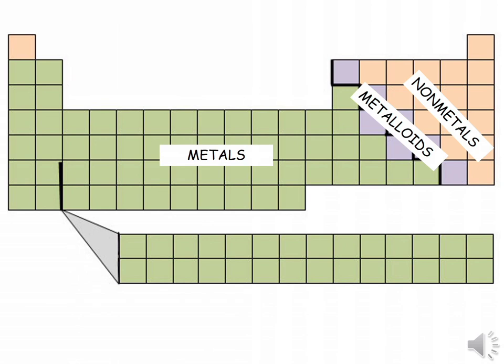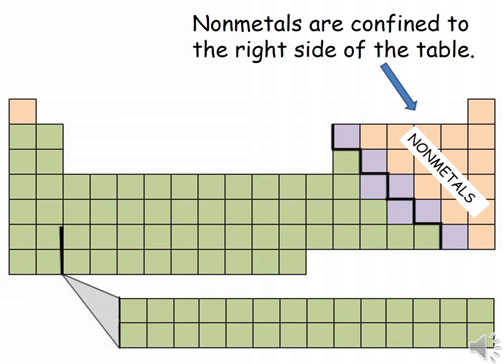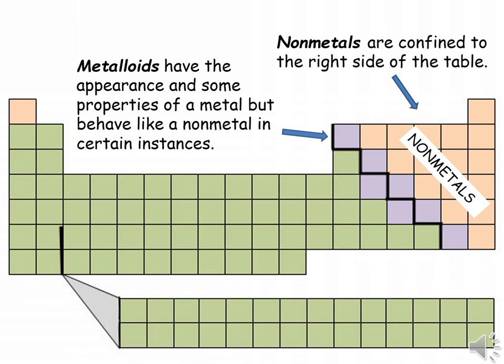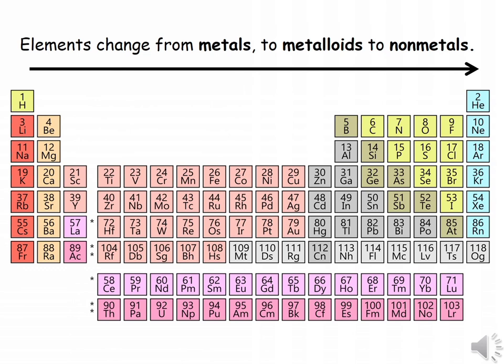The nonmetals are confined to the right side of the table. The elements along the stair step line are the metalloids. Metalloids have the appearance and some properties of a metal, but behave like a nonmetal in certain instances. In the periodic table above, elements are color-coded to show their class.